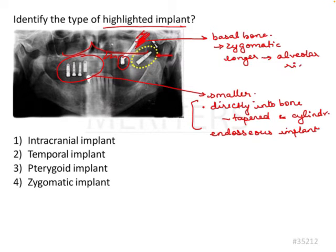They are opening up on the alveolar ridge for the prosthesis. So this implant is a longer implant — it's a zygomatic implant. And the highlighted implant — now coming to the main implant in question.